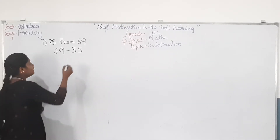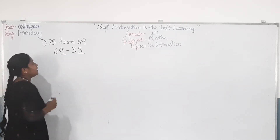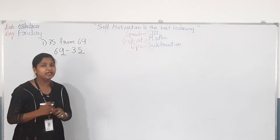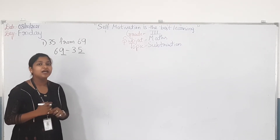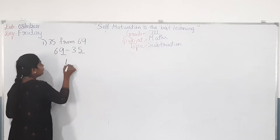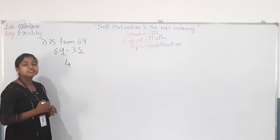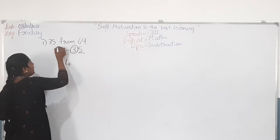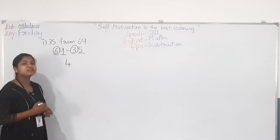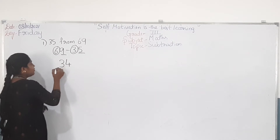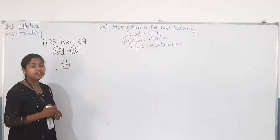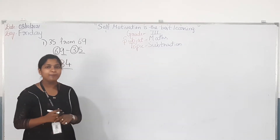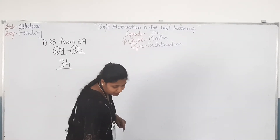What are the numbers in the ones place? This is 5 and this is 9. What is 9 minus 5? Mentally I think you can do it. 9 minus 5 is 4. Next, subtract the number in the tens place. Here it is 3 and here it is 6. 6 minus 3 is 3. So the answer is 34. That is 34. Yes, mentally I have solved it.